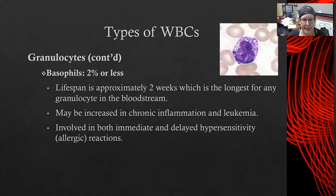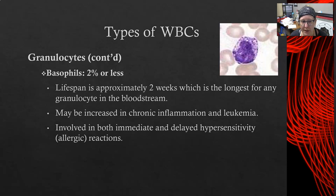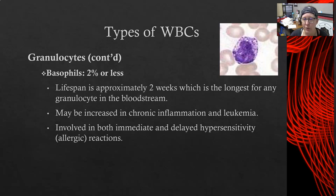The last granulocyte is the basophil, expected at about two percent or less of white cells in circulation. Their lifespan is approximately two weeks — the longest of any granulocyte. Basophils may increase in chronic inflammation and leukemia, and are involved in both immediate and delayed hypersensitivity reactions. The delayed hypersensitivity reaction, like a poison ivy or poison oak reaction that takes about 48 hours to develop, involves basophils. People with chronic allergies would be expected to show slightly elevated basophils and eosinophils.